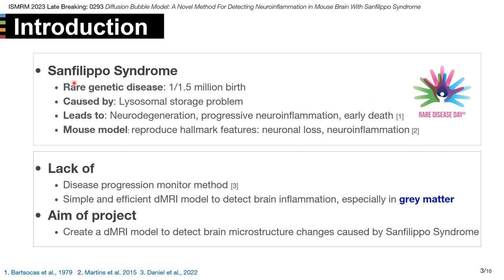Sanfilippo syndrome is a rare genetic disease. It is caused by lysosomal storage problems in the human body. It can lead to neurodegeneration, progressive neuroinflammation, and early death. Mouse models from our collaborator's lab can reproduce the hallmark features of this disease, namely neuronal loss and neuroinflammation. Until now, there is no efficient way to monitor the progression of this disease, although it is quite important for clinical treatment and study. Diffusion MRI could be the potential way to do that.